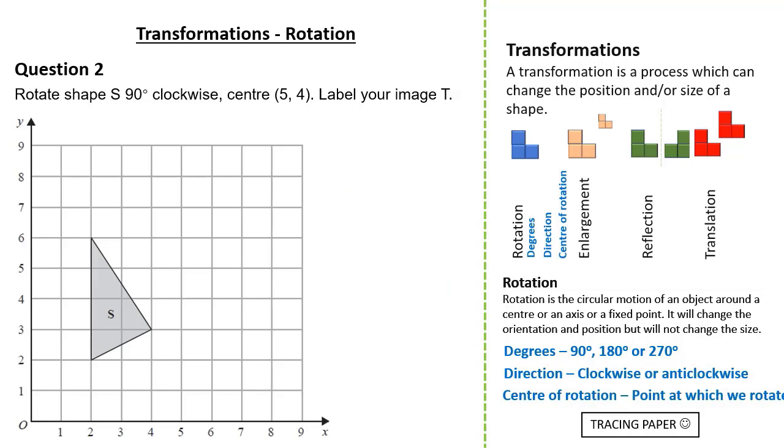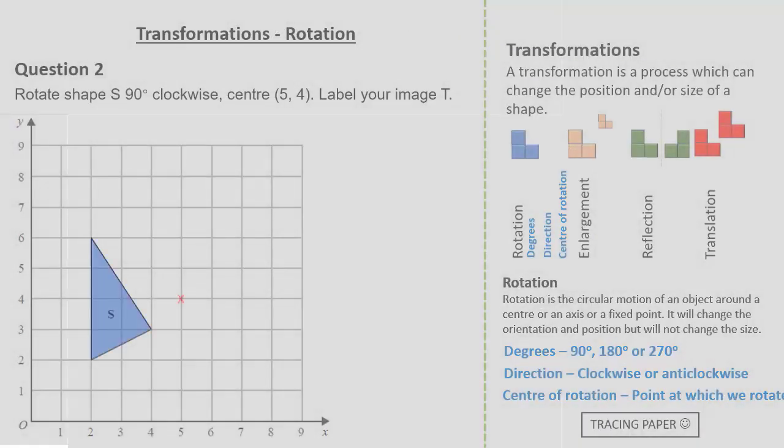Firstly let's place our tracing paper on our question. Then we draw our centre of enlargement on our shape S. Then we simply put our pen point or pencil point at the centre of enlargement. Then like the question asks we rotate our tracing paper 90 degrees.